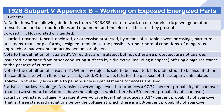Statistical spark overvoltage: a transient overvoltage level that produces a 97.72% probability of spark over — that is, two standard deviations above the voltage at which there is a 50% probability of spark over.